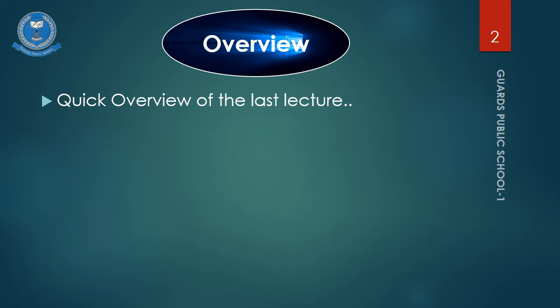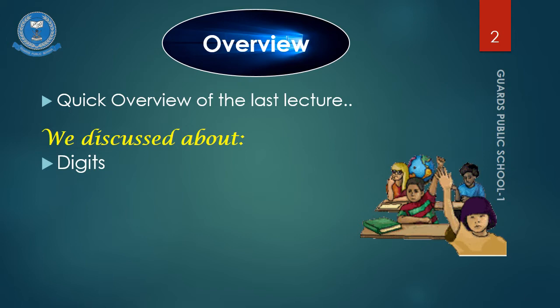Before starting our today's lecture, let's take a quick overview of the last lecture. In the last lecture, we discussed about digits. Remember students, what are the digits? Yes, they are the single unit numbers. Students, digits mean koi bhi number jo akela ho. They say 0, 2, 5. Lekin digits ke saari number 0 se 9 takhi hote hain. Kyunki 0 se 9 takhi numbers akela hote hain.